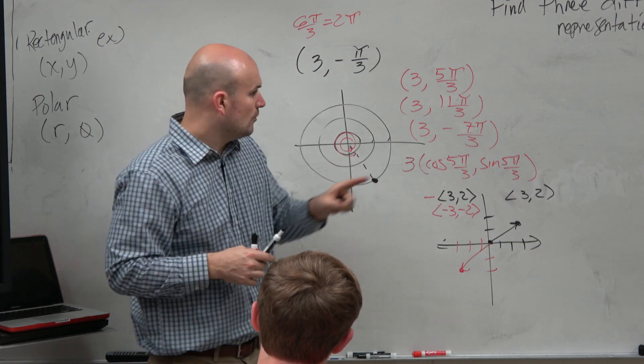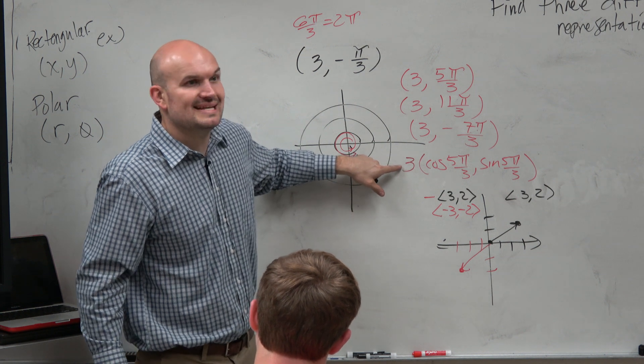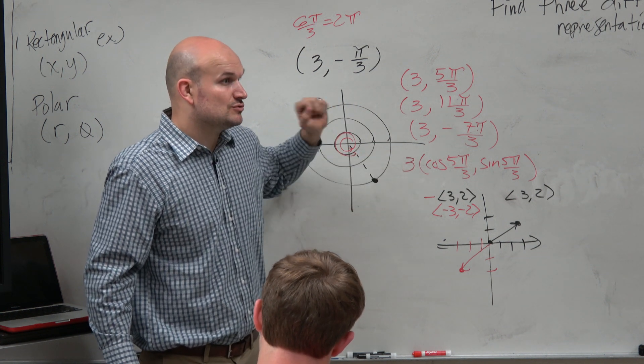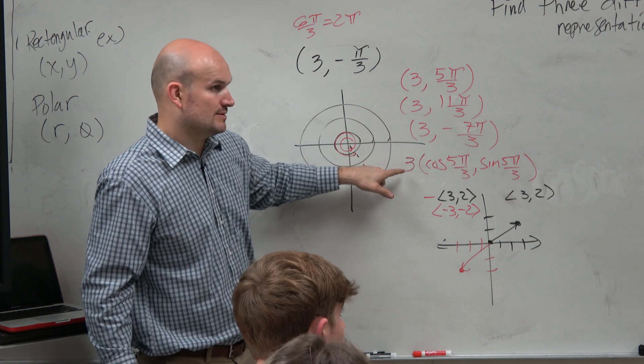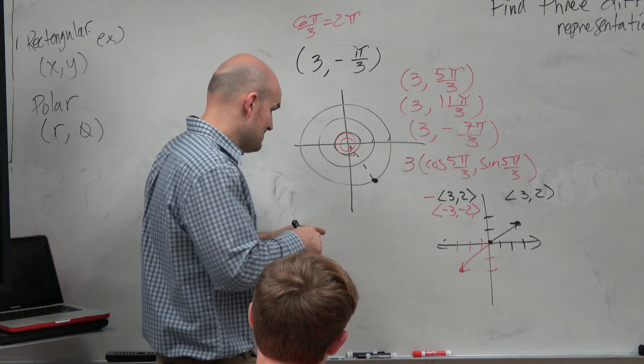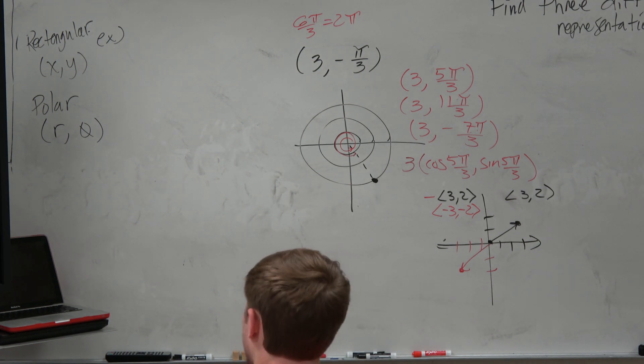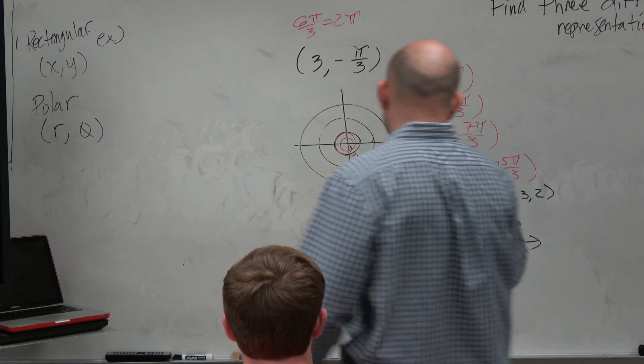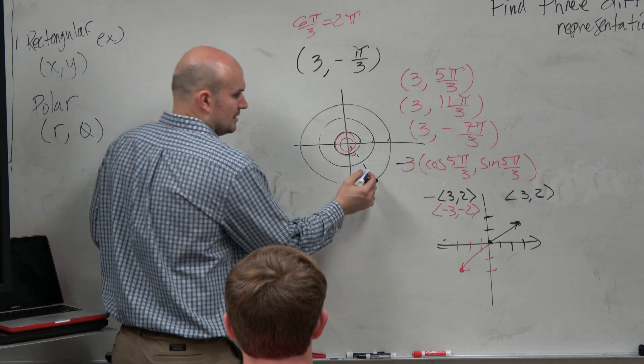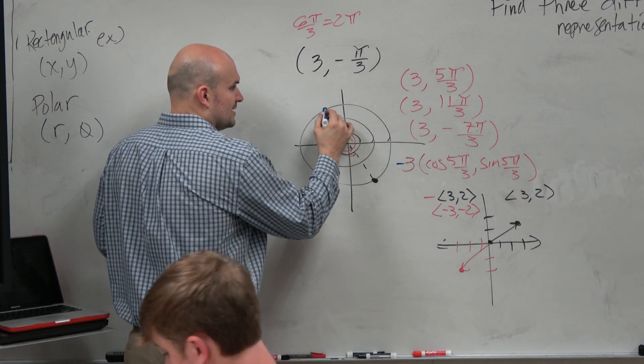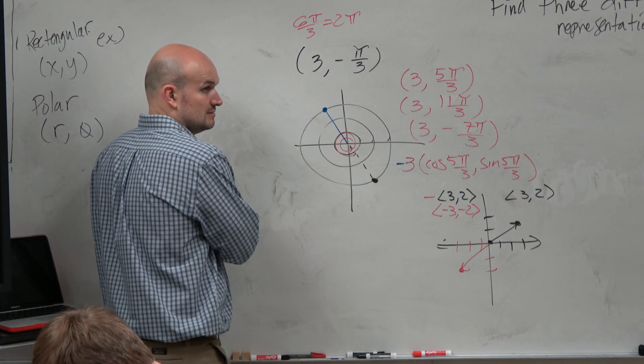Do you guys see what the negative did? Right? So what if this 3 was a negative? Would it change the actual distance away from the origin? No. If I made this, lost my blue, if I made this a negative, it would just reflect this over here.